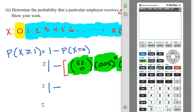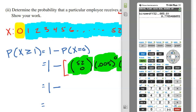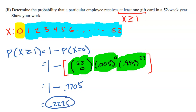On the TI-84, go to 2nd VARS and select binomPDF. Binomial PDF calculates any individual outcome of a binomial distribution. Enter 52 trials, probability of success 0.005, and X equals zero successes. The calculator does all the math: 0.7705. So one minus 0.7705 equals 0.2295. There is a 22.95% chance of winning at least one gift card — as an employee, a pretty good chance you'll win at least one gift card during the year.